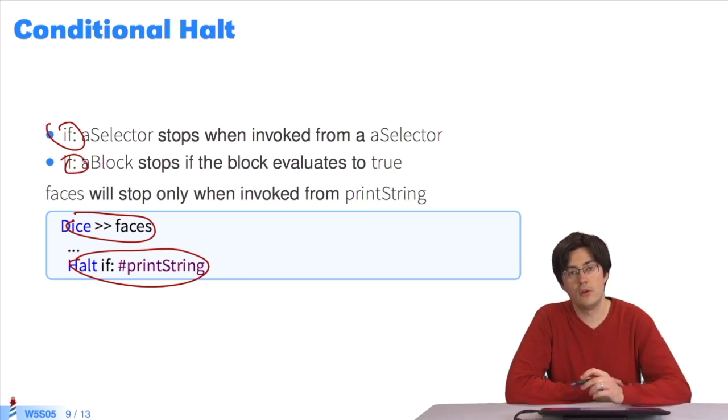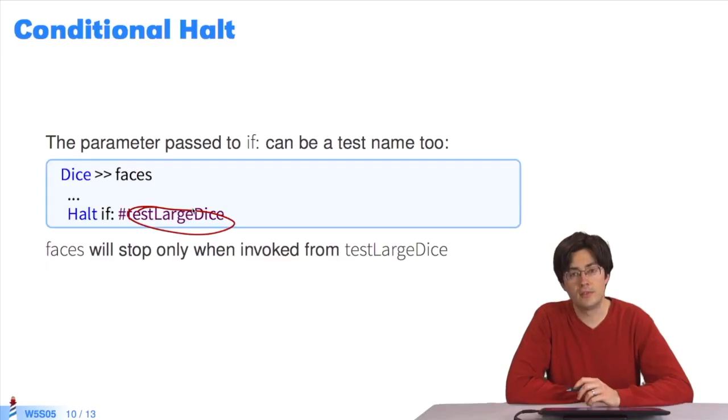IF can also take a block. We can put any bit of code in the block, if it evaluates to true to make the debugger stop. Since the tests in Pharo are methods in the call stack, you can put the test number so that a bit of code only stops when it's executed from a test.